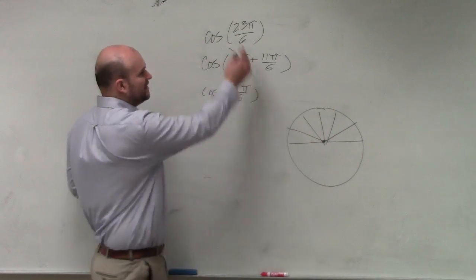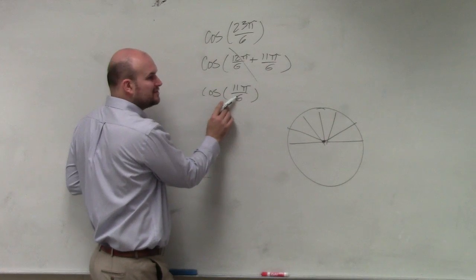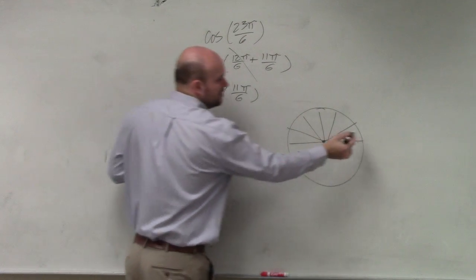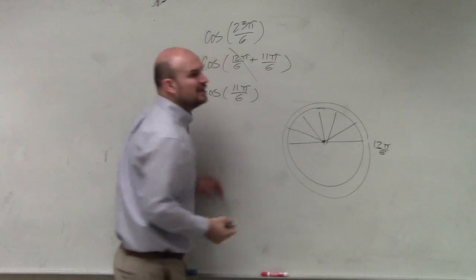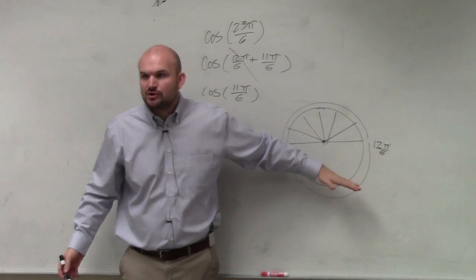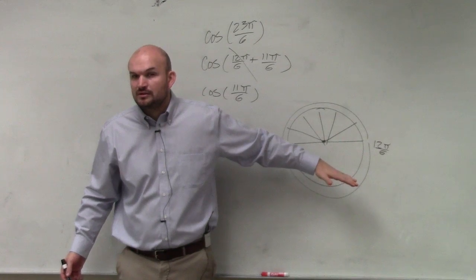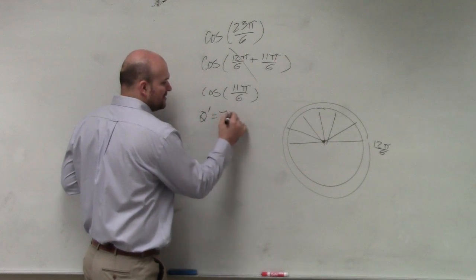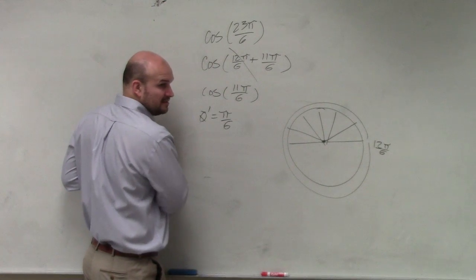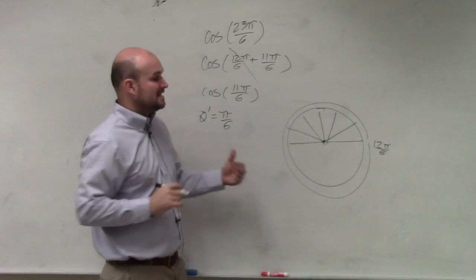But guys, if you could get rid of the 12π/6, now all we need to do is go to 11π. Well, if I know all the way around the circle is 12π/6, 11π/6 is just going to be how much shorter? π/6. So I can say the reference angle is π/6, right? Reference angle is π/6.